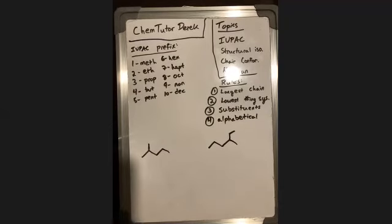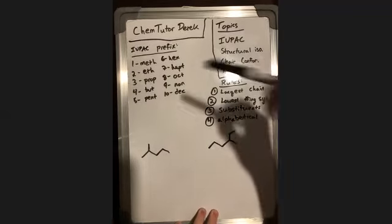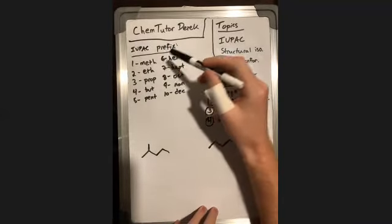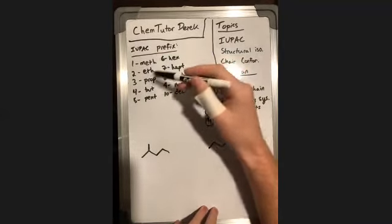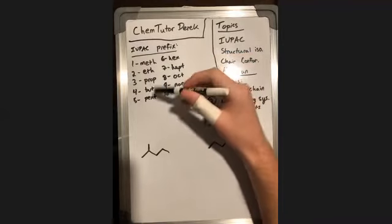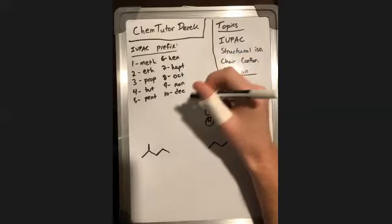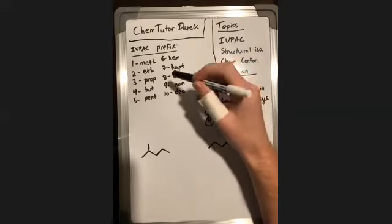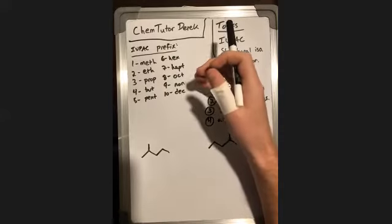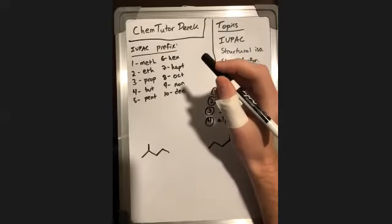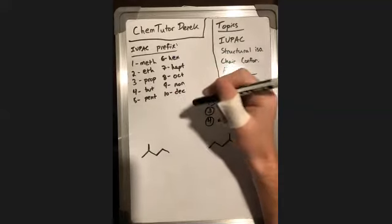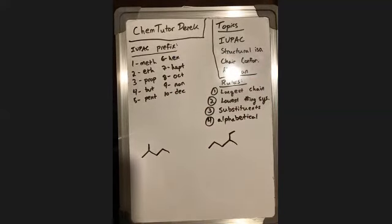The first thing you need to know with IUPAC naming is the prefixes for all numbers of carbons. One is meth, two is eth, three is prop, and so on. Once you get beyond but, which is four, they're more standard Greek-like prefixes, so those are easier to remember. You'll just have to memorize this set of 10. Usually you won't be expected to go beyond 10, though further prefixes for 11 and 12 exist.